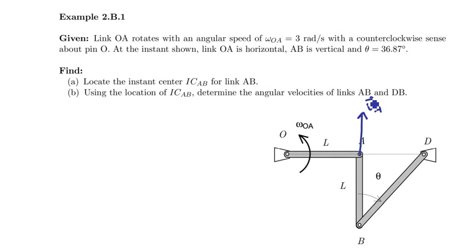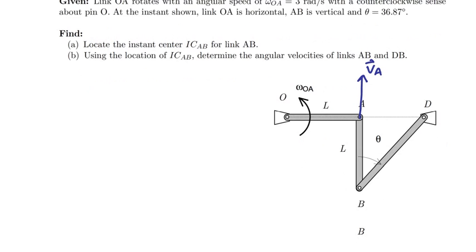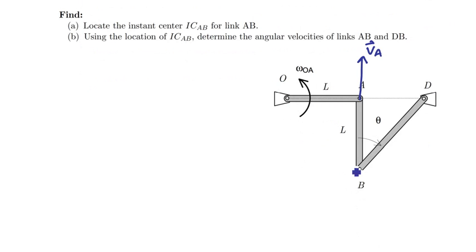Now if I use somewhat similar logic, we know that the velocity of point B has to be perpendicular to the line connecting points B and D. And so in this case, I know that the velocity of point B has to be somewhere along the line which is perpendicular to line BD here, so the velocity has to be somewhere along this line I've indicated.